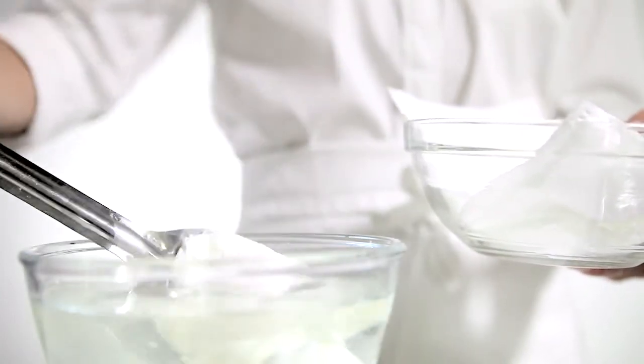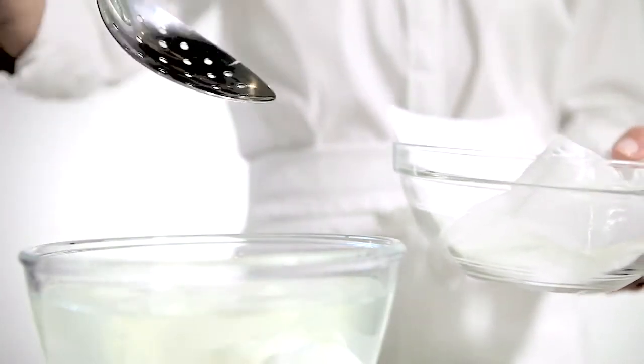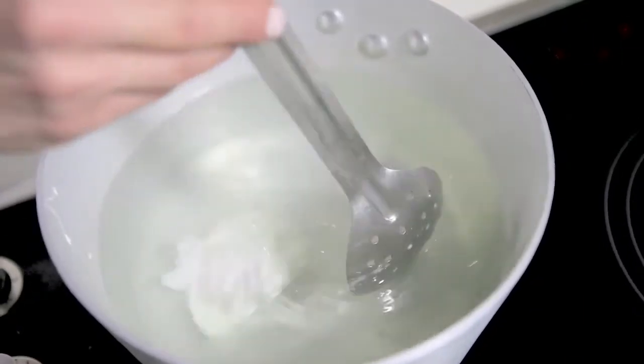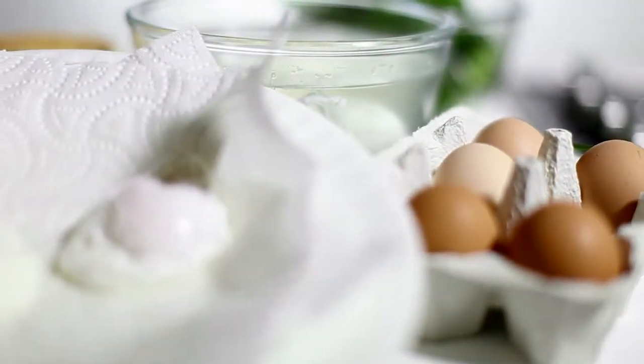If you're not using the egg immediately, you can store them in a bowl of ice water. To reheat, simply place back in simmering water for 15 to 30 seconds.